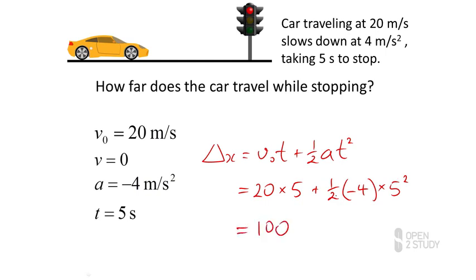You should be able to calculate that one-half times minus 4 times 25 is going to give us minus 50. So our final result is that it took 50 metres for the car to slow down.